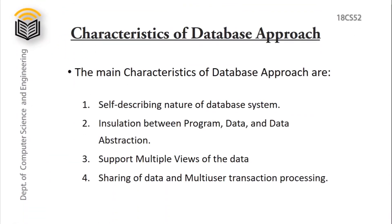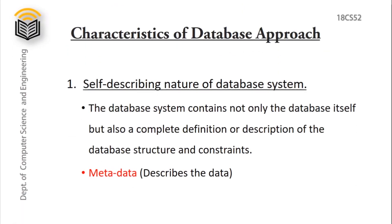Characteristics of database approaches. The main characteristics are: first, self-describing nature of database system; second, insulation between program, data, and data abstraction; next, support for multiple views of the data, and sharing of data and multi-user transaction processing. Self-describing nature means a DBMS will have a catalog, that is metadata, where we store the description of the database. This metadata allows the database to work with DBMS software.